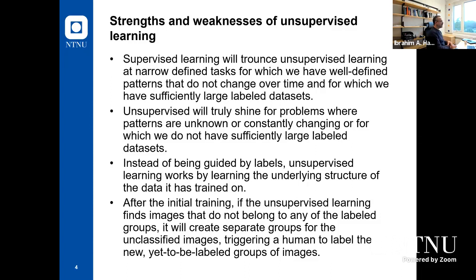After initial training, if the unsupervised model finds images that don't belong to any labeled groups, it will create a separate group for the unclassified images, triggering a human to label the new yet-to-be-labeled groups. If the model discovers a new class, it will trigger the user to give it a label. It's the same with email — sometimes you get emails that go into the spam folder, maybe spam or maybe not, and it triggers the user to check and give it a label.